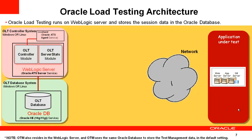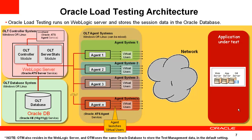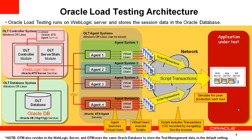This diagram shows the Oracle Load Testing architecture. When you install Application Testing Suite, three core components are installed: ATS Server, ATS Database, and ATS Agent. The OLT Controller and OLT Server Stats modules run within WebLogic Server and store session data into the Oracle database. When you start a load test, the OLT Controller communicates with agent processes — you can run multiple agents distributed across multiple systems — and each agent launches virtual users that execute your recorded scripts, enabling realistic concurrent load simulation.